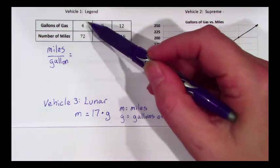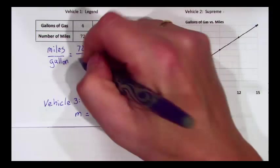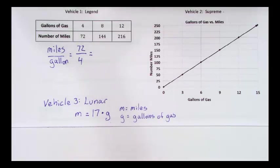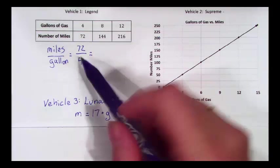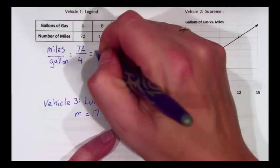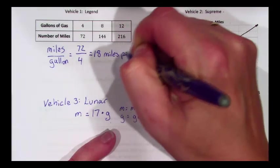Seventy-two miles, four gallons. And when we do the division, we're going to find out how many miles per gallon we have. Seventy-two miles divided by four gallons gives us eighteen miles per gallon.